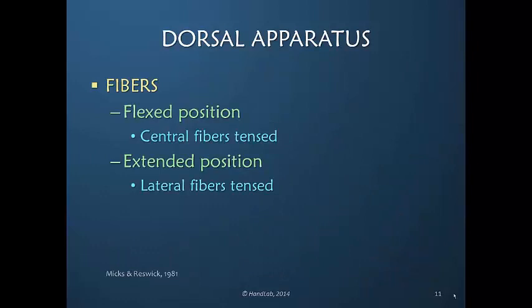The fibers in the dorsal apparatus, when the finger is flexed, have tension in the middle portion. Think about it: if a tendon is going over the top of a joint and the joint is flexed, the tendon has a longer distance over which it must traverse. Versus the lateral fibers — the lateral bands — which are not as tense during flexion. So in the flexed position it's the central fibers that are tense, and in the extended position it's the lateral fibers.